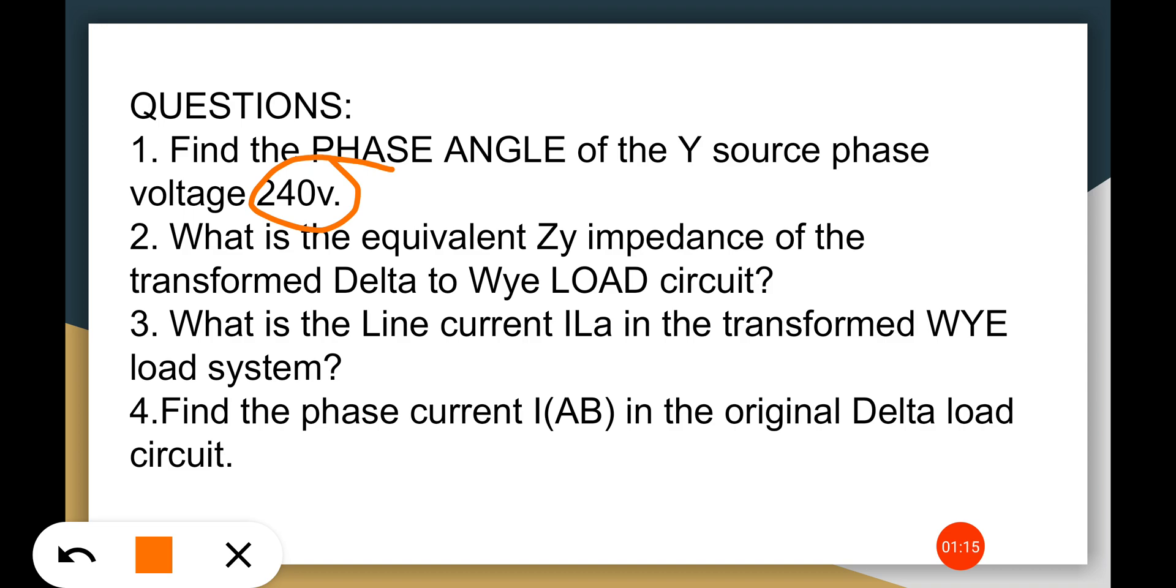What is the equivalent Zy impedance of the transformed delta to Wye load circuit?